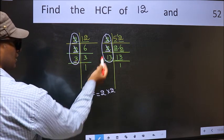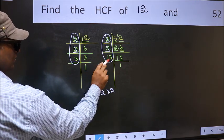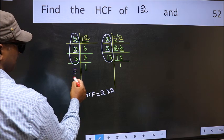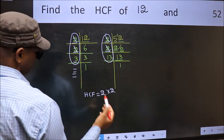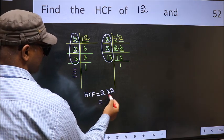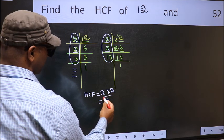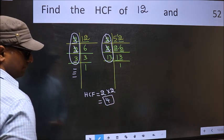Next number 3. Do we have 3 here? No. No more numbers have been left out. So our HCF is 2 times 2. 4 is our HCF.